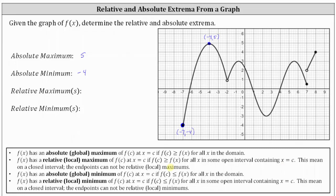Similarly, f of x has a relative or local minimum of f of c at x equals c if f of c is less than or equal to f of x for all x in some open interval containing x equals c. We identify the relative minimums by identifying the low points on the graph. However, we have closed endpoints, so we can't include them as possible relative minimums, because we cannot approach the endpoints from the left and right, which is what's necessary for x equals c to be in some open interval.